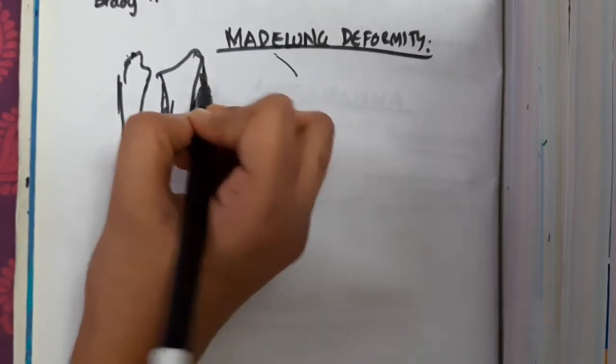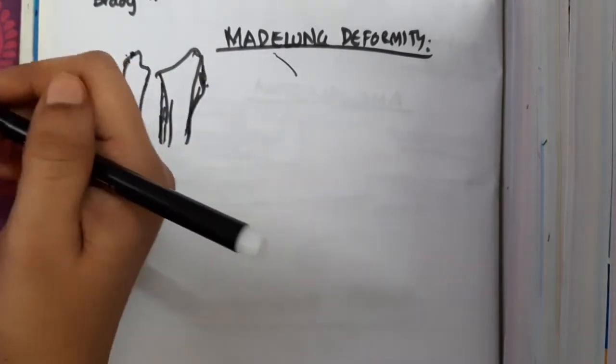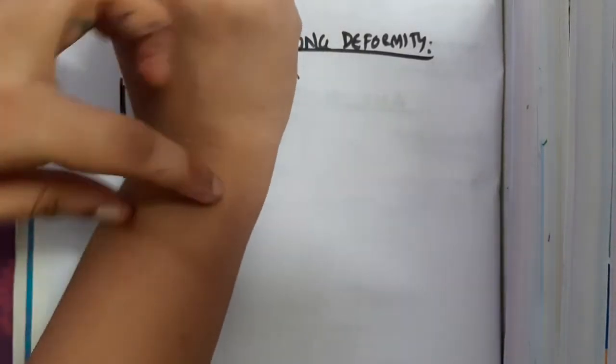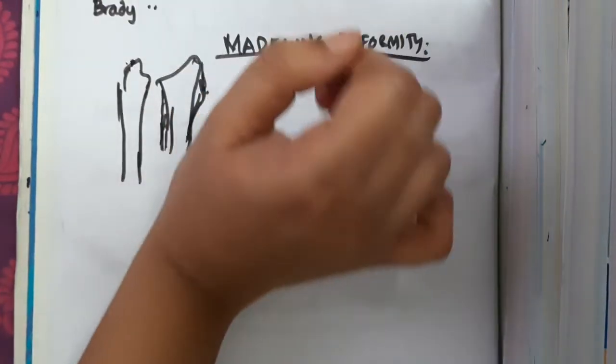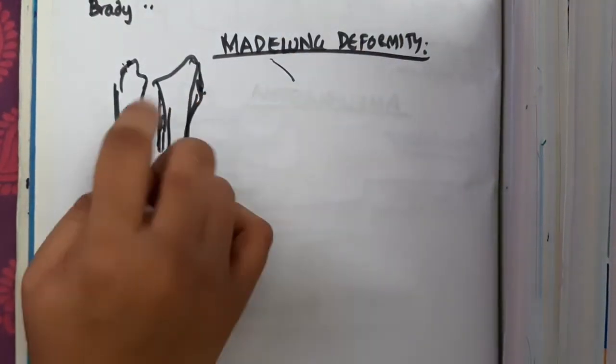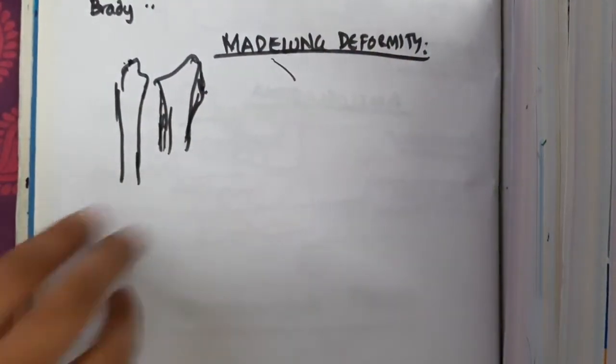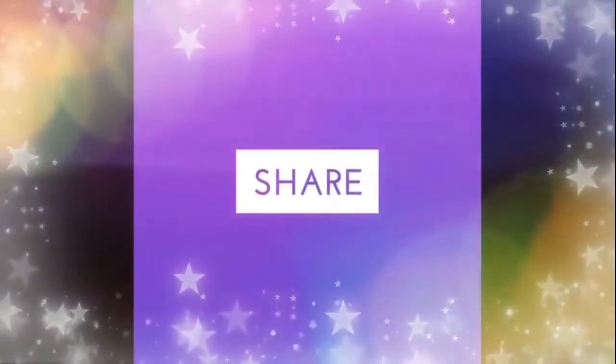Subluxation of the ulna with anterior bowing of the radius will show a defect here with broadening of the wrist. That broadening of the wrist, seen due to the ulnar defect, is Madelung deformity. Thank you for watching.